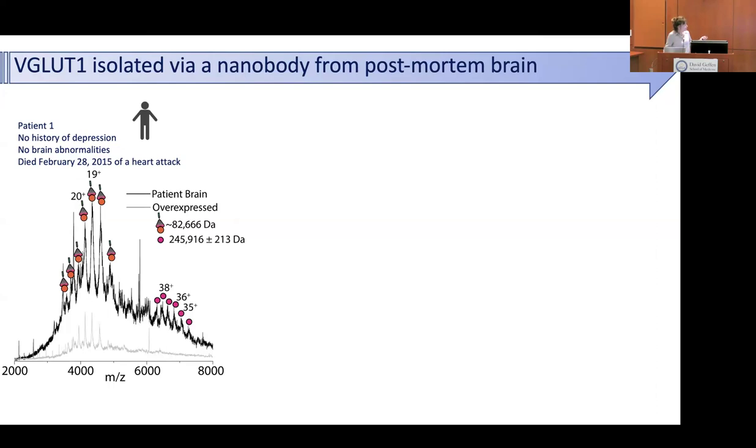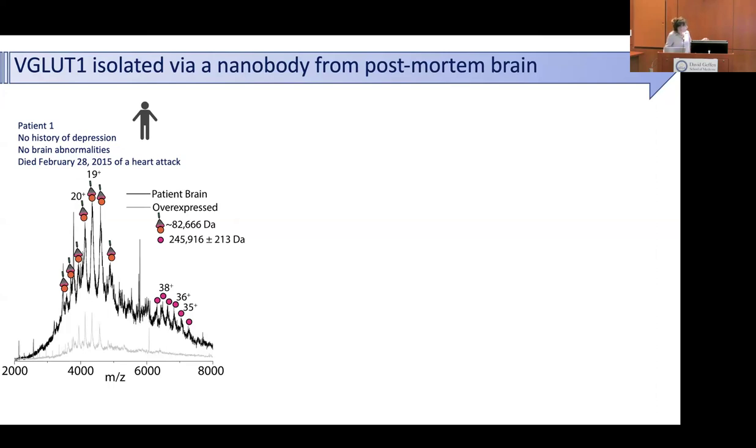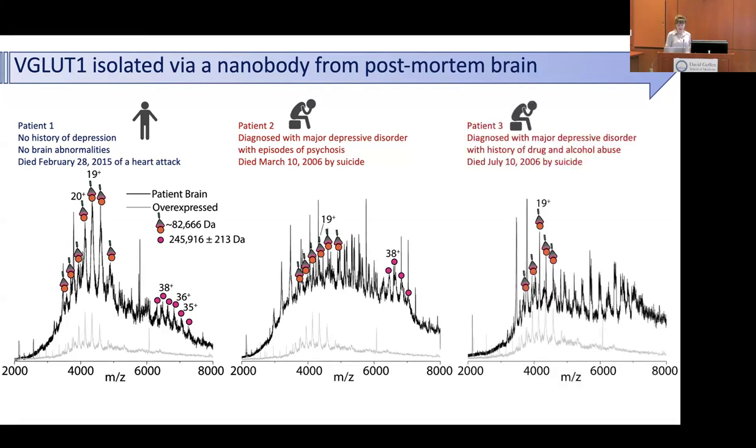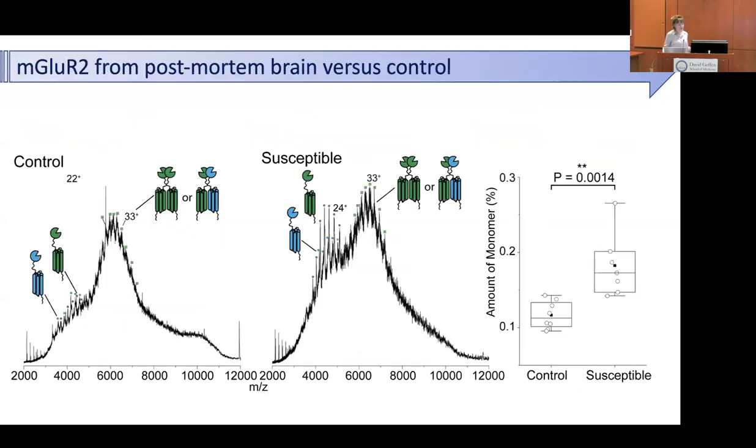So this, sorry, with the depressed brains. Again, no history of depression, died of a heart attack. Quite normal pattern for us. Don't really understand. Major depressive disorder with episodes of psychosis. Very much perturbed. This is the vesicular glutamate. It has a lot of changes of mass. Are there things that we can now capture? This is a patient who also had major depressive disorder of female. And you can see again, a very different pattern to our control experiment. So the metabotropic glutamate receptor from post-mortem brain is, again, very much more monomeric, implying that we have some impaired transport going on when we have these susceptible brains.